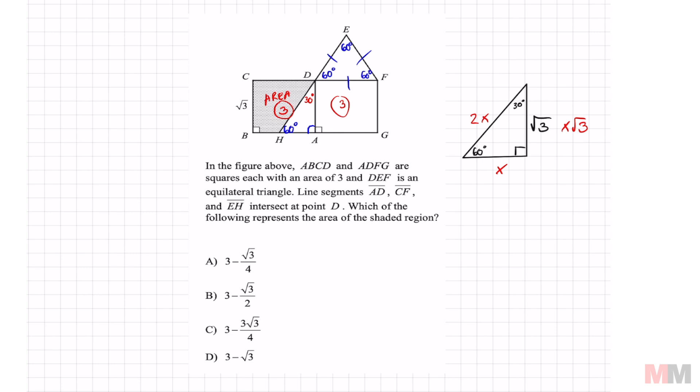If you look at this triangle, all we really need is the base. Because once I have the base, I got the height right here, then I can find the area of a triangle, which is half base times height.